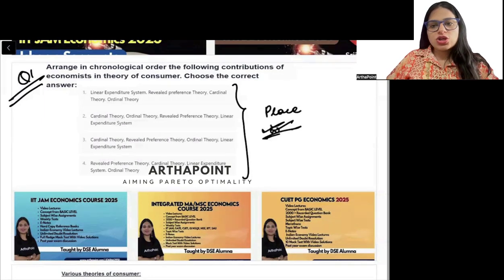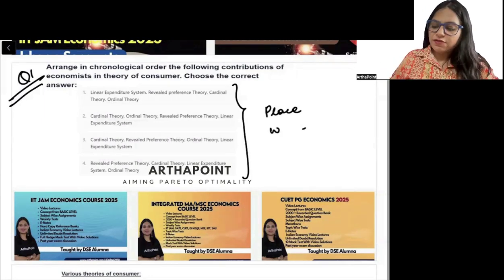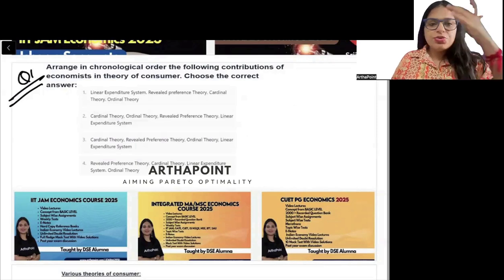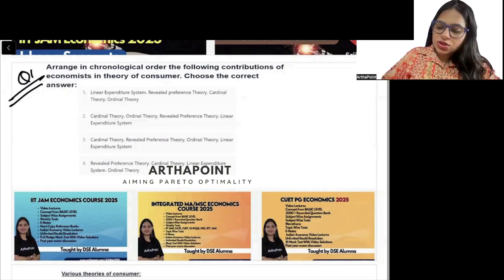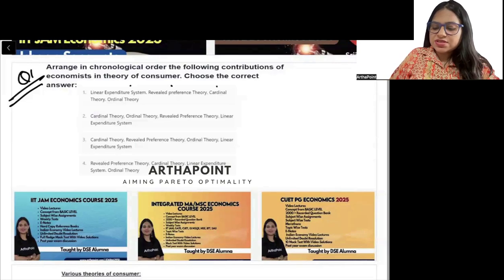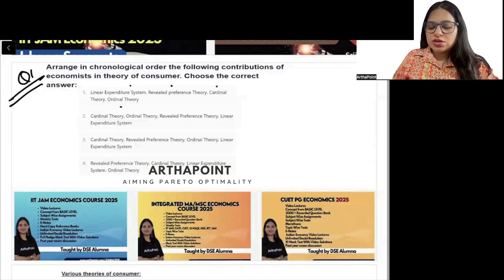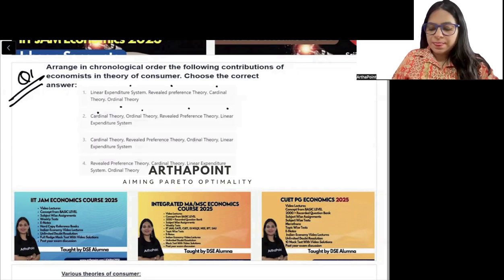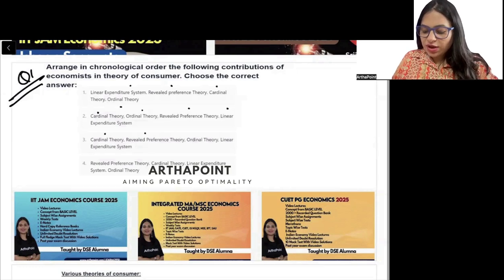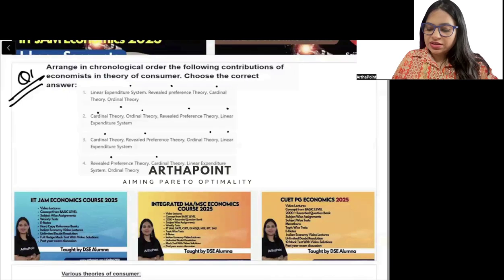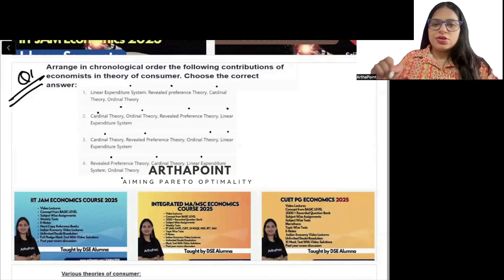You have to place these in chronological order. The options are: Linear expenditure system, revealed preference, cardinal theory, ordinal theory. Option A: cardinal, ordinal, revealed, linear. Option B: cardinal, revealed, ordinal and linear. Option C: ordinal, revealed, cardinal, linear and ordinal.